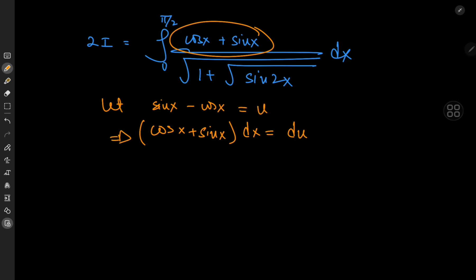That substitution gives us the new differential element. For the limits: as x approaches 0, sin(0) − cos(0) = 0 − 1, so u approaches −1. As x approaches π/2, sin(π/2) − cos(π/2) = 1 − 0, so u approaches 1. This implies I equals (1/2) times the integral from −1 to 1 of du divided by 1 plus the square root of...